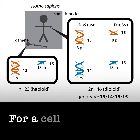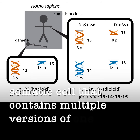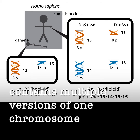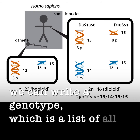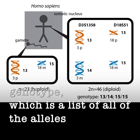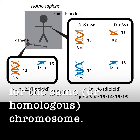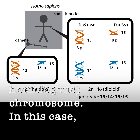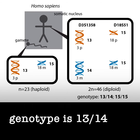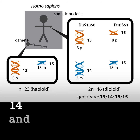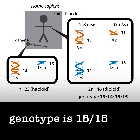For a cell like the somatic cell that contains multiple versions of one chromosome, we can write a genotype, which is a list of all of the alleles for the same or homologous chromosome. In this case, chromosome 3's genotype is 13/14, and chromosome 18's genotype is 15/15.